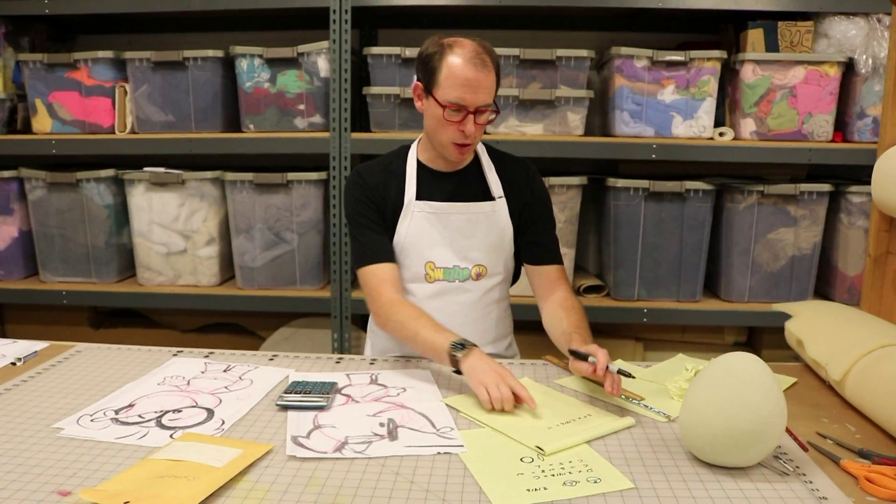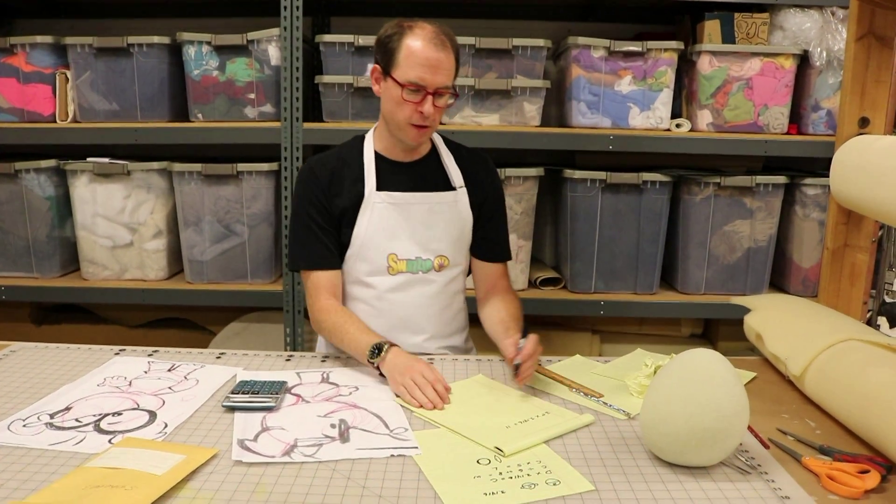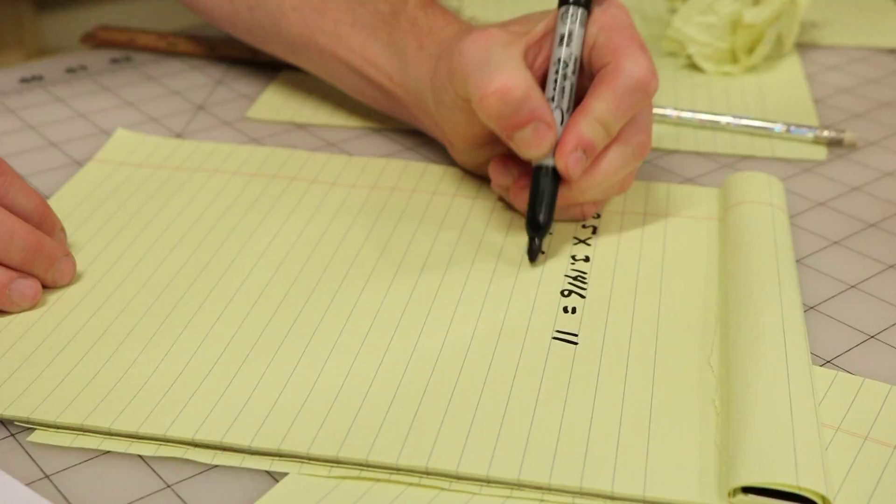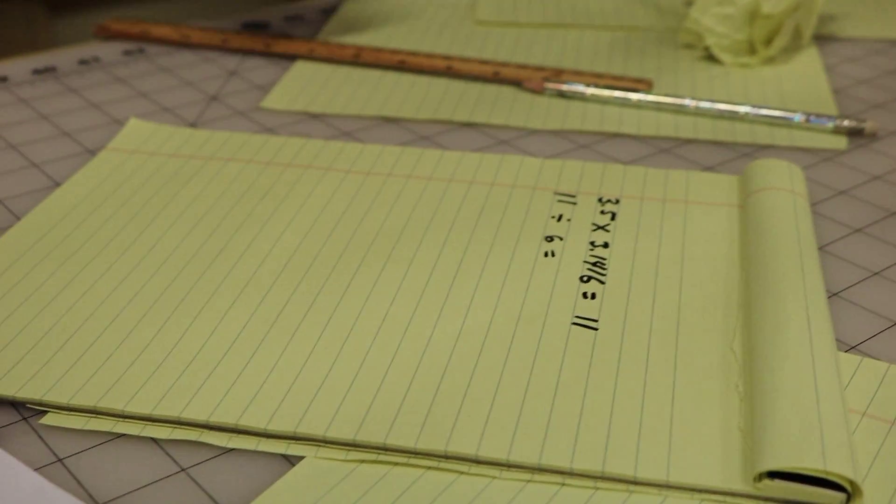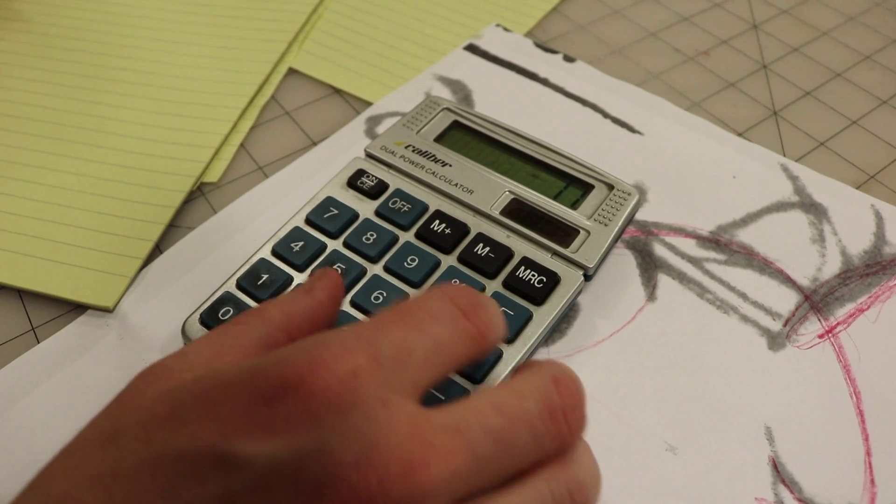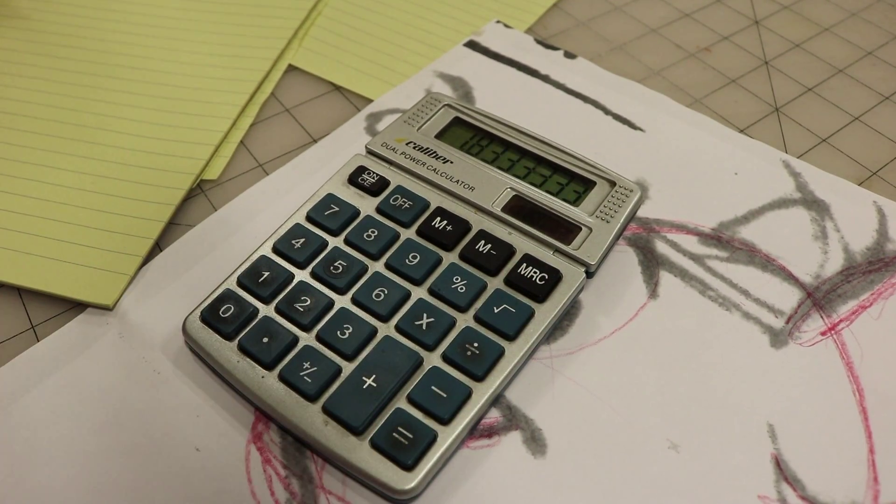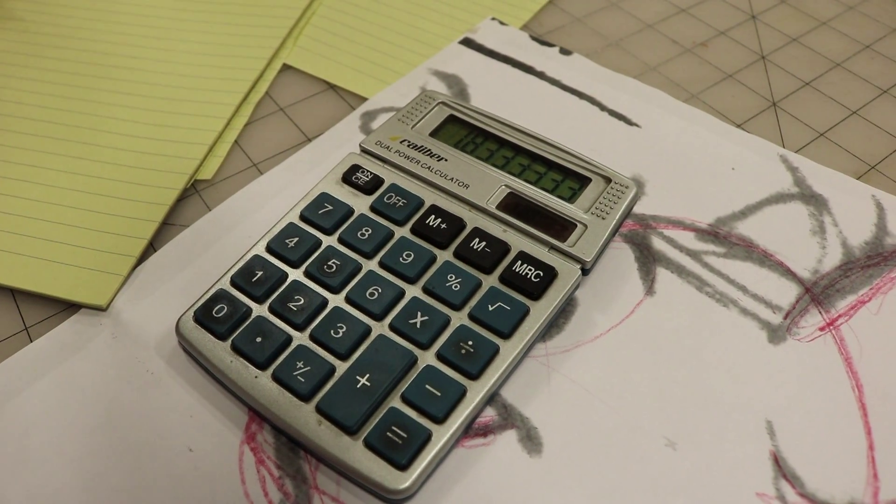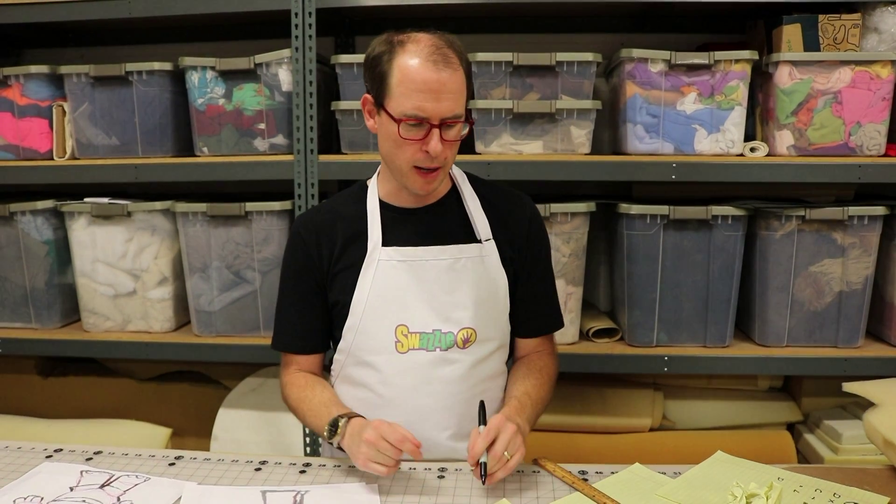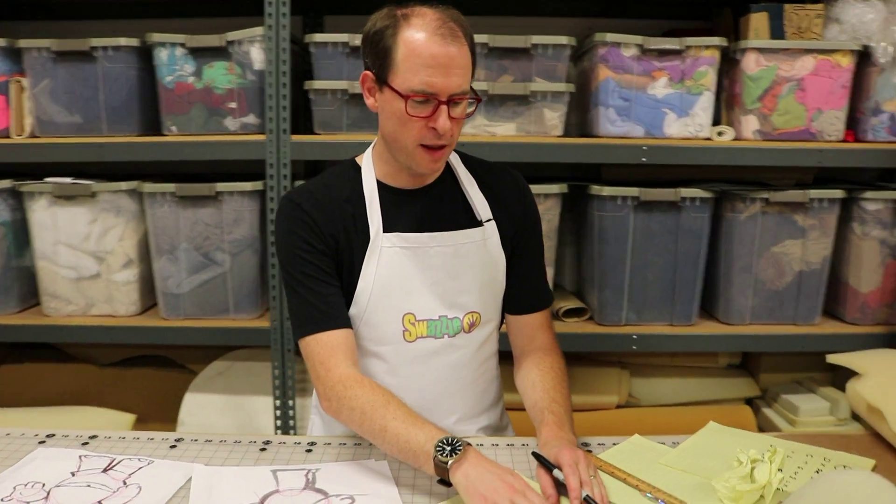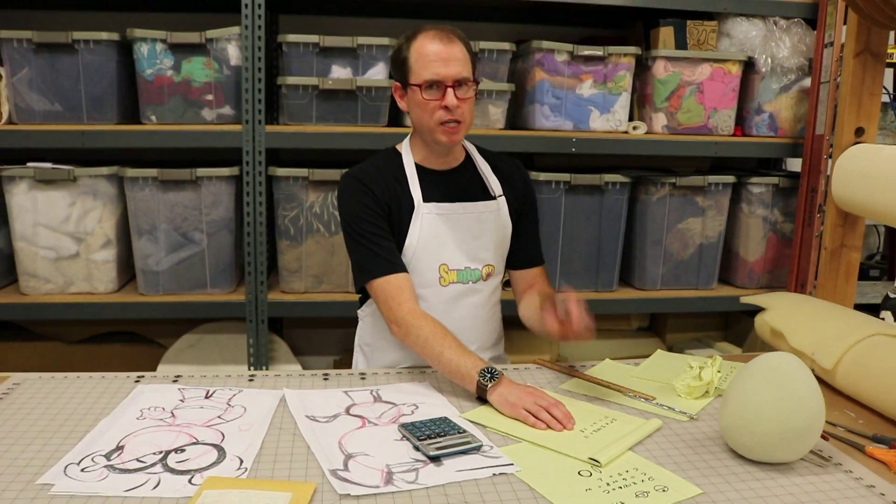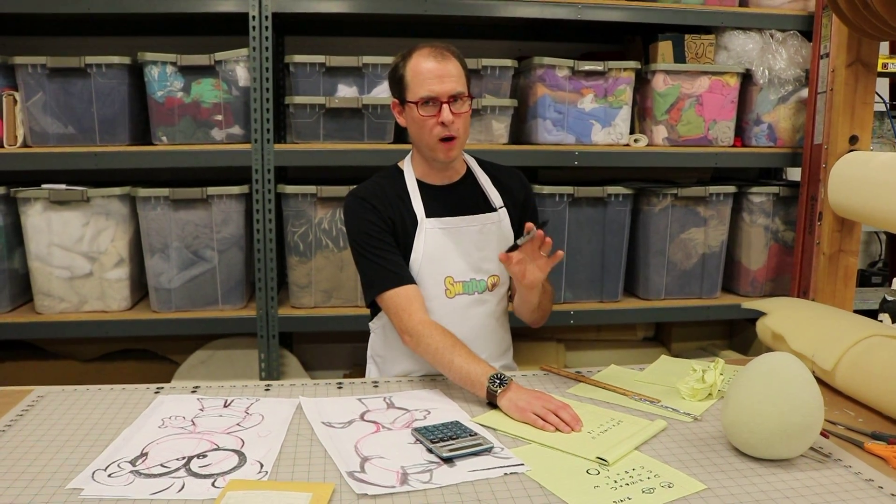Now we need to figure out the size of each petal that's going to make up this sphere. So we're going to take this circumference number, we'll refer back to my formula, 11. We're going to divide by 6. 11 divided by 6 equals 1.8, just shy of 2. So now we know that the width of each petal will be just less than 2 inches wide.